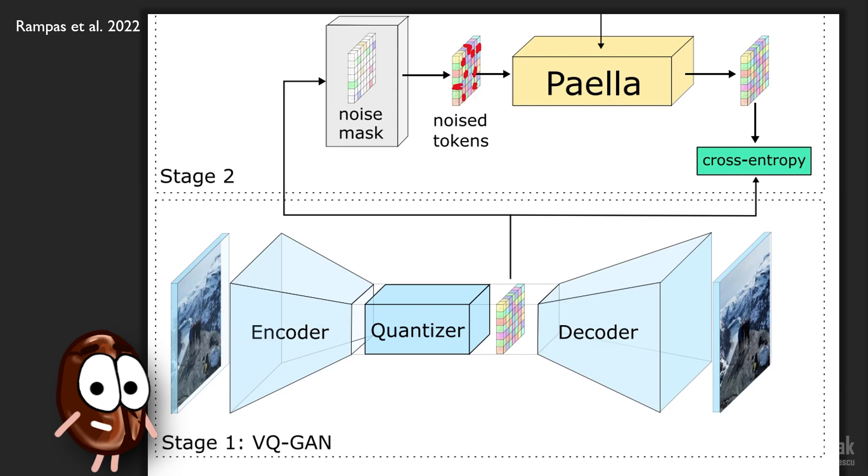Paella is CNN-based and not transformer-based, like prior work. This has the advantage of being more runtime efficient and can work with larger inputs, therefore the compression into the codebook does not have to be that stark, so important details from the image can be kept. Paella takes the noised representation, the number of steps and the condition to denoise the latent representation.